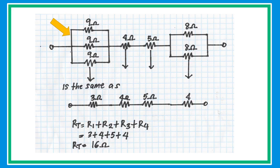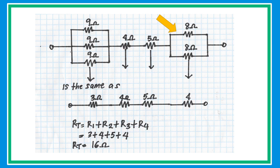The next example looks hard but is actually very simple with a few tricks. First, three 9-ohm resistors are connected in parallel — divide 9 by 3 to get an equivalent resistance of 3 ohms. Next, two 8-ohm resistors are in parallel, so take half of 8 to get 4 ohms. The circuit is now a simplified series circuit. Using RT = R1 + R2 + R3 + R4, substitute the values and add all individual resistors to get a total equivalent resistance of 16 ohms.